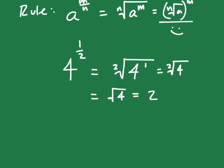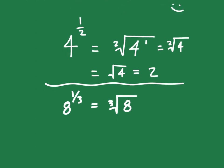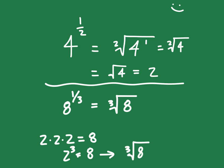Let's look at another example: eight to the one-third power. We can say we're going to take the cube root of eight. You have to know your perfect cubes — what number multiplied by itself three times gives us eight? Two times two times two gives you eight, so two cubed gives you eight. Therefore, going backwards, the cube root of eight brings you back to two.